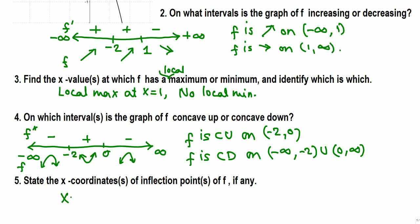Finally, we state the x coordinates of the inflection points. At x equals negative 2, the concavity changes from concave down to concave up, so that is an inflection point. At x equals 0, the concavity changes from concave up to concave down, so that is also an inflection point. The x coordinates of the inflection points are negative 2 and 0.